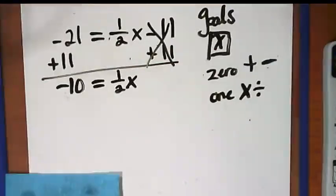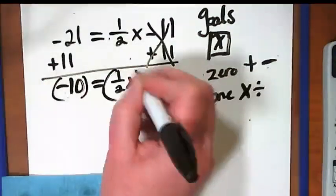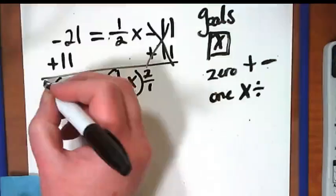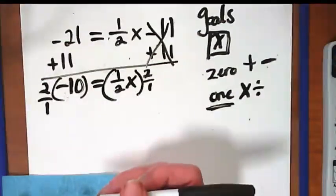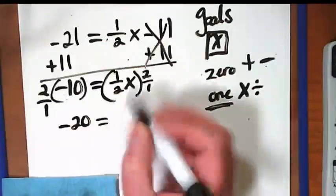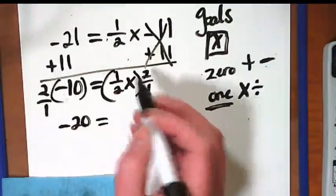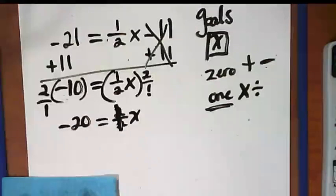Now we've got one half X. What is the reciprocal of one half? Say a letter. Two over one. I am going to multiply both sides by two over one because we want to get a one, an invisible positive one. If I do two times negative 10, I get negative 20. If I do one half times two over one, I get two over two, and the X comes down. That becomes my invisible one. Are we feeling a little bit better about this?